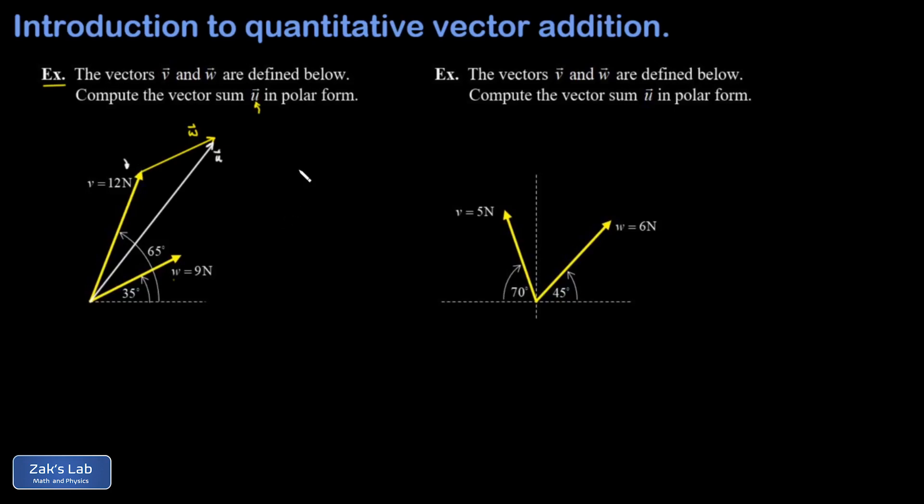I proceed to get the x and y components of each of these vectors v and w. vx is going to be the hypotenuse, that's 12 newtons, times the cosine of 65 degrees. To three sig figs that gives me 5.07 newtons. The y component of v is 12 sine of 65, and that gives me 10.88 newtons. The x component of w—that vector has a magnitude of 9 and an angle of 35—so it's going to be 9 newtons cosine 35 degrees, that gives me 7.37 newtons. And finally the y component of w, and that's 5.16 newtons.